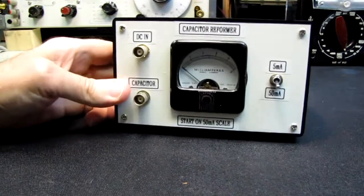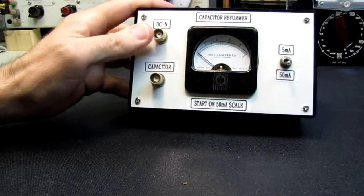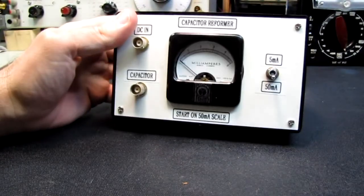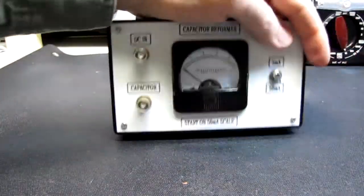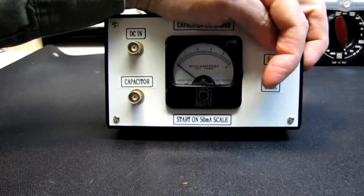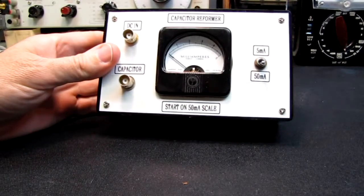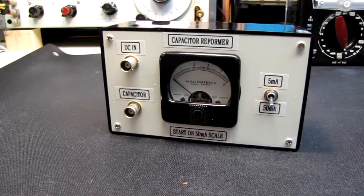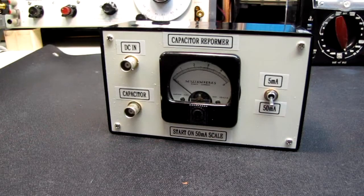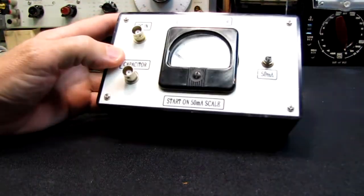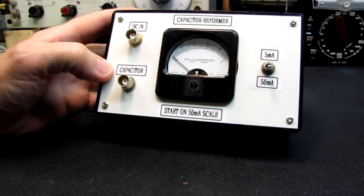And this is just a BNC in for the DC, a BNC out for the capacitor, and a 5 milliamp meter movement. And I put a homemade shunt across there so it will handle 50 milliamps as well, because you don't want to start out on 5 milliamps in case the capacitor is shorted right from the get-go. And again, I could have used just the standard Triplet, but this makes it nice and neat and easy so I'm back in business here.